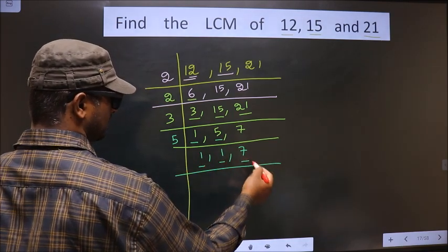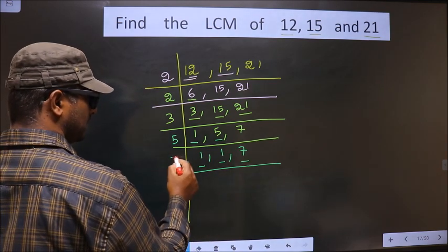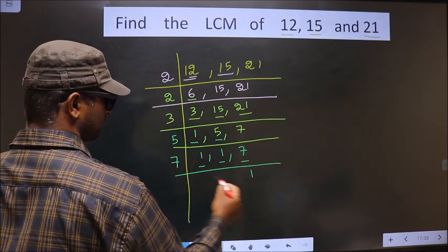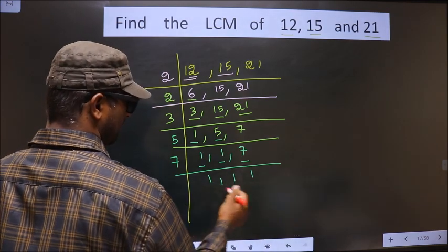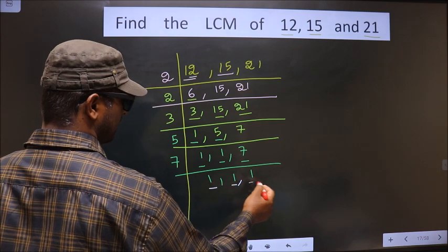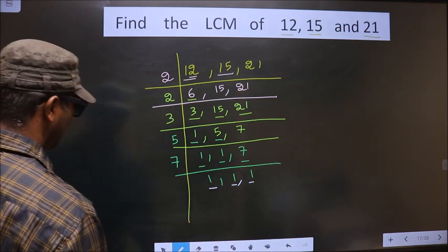Now focus on to the next number that is 7. 7 is a prime number, so we take 7 here. So now we have got 1 in all the 3 places.